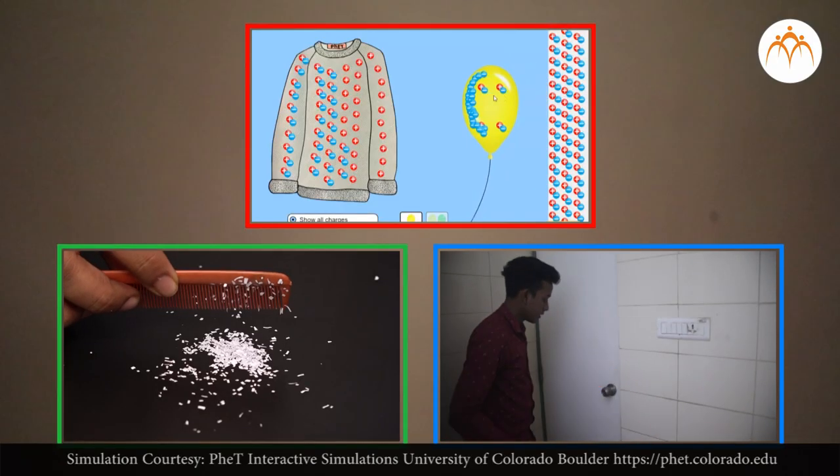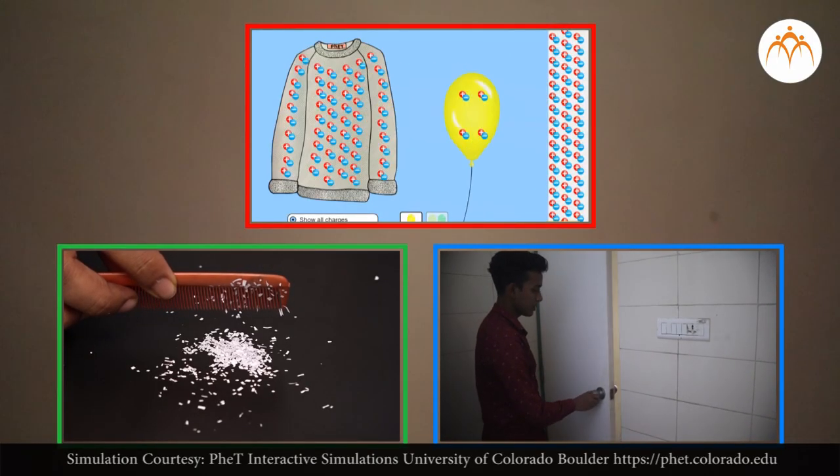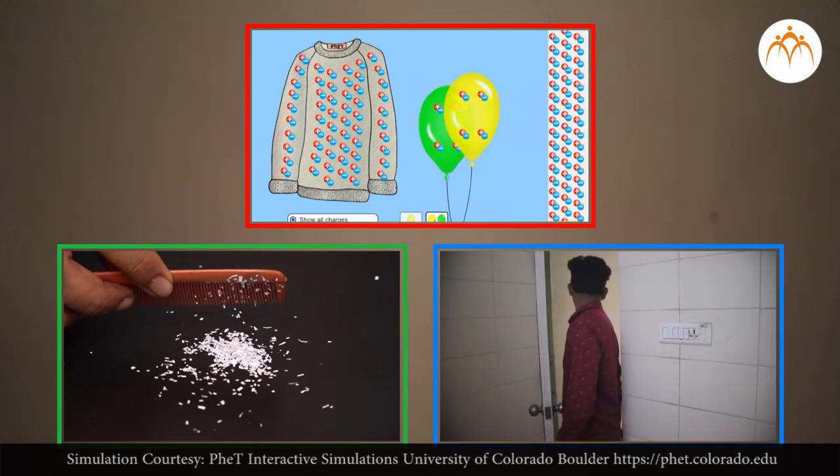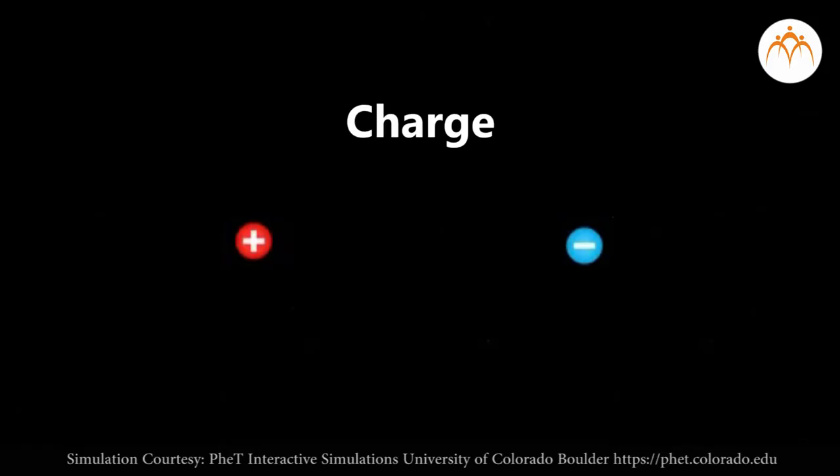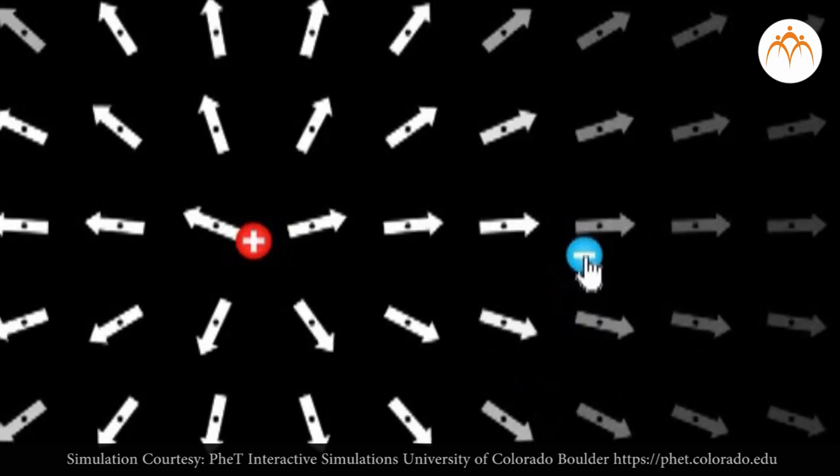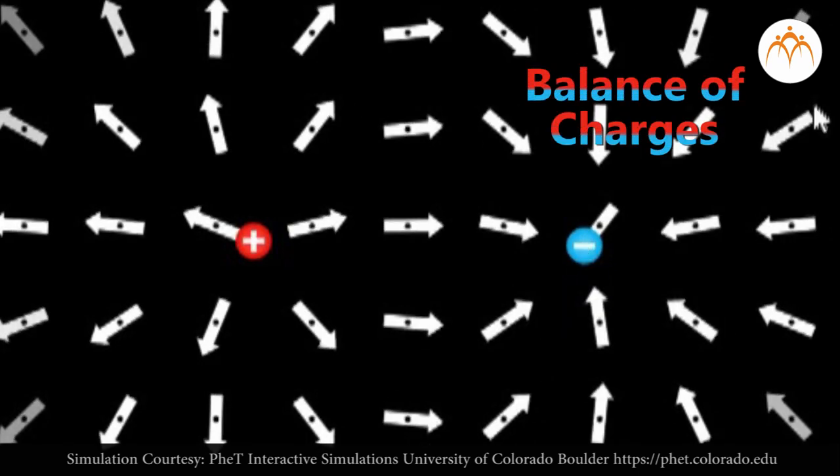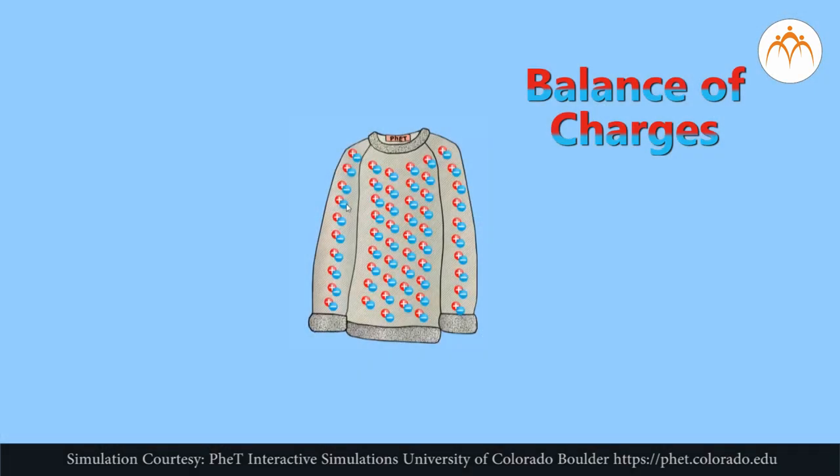However, for most objects, this charge is hidden as the object contains equal amounts of positive and negative charge. With the balance of positive and negative charges, the object is said to be electrically neutral. There is no net charge.